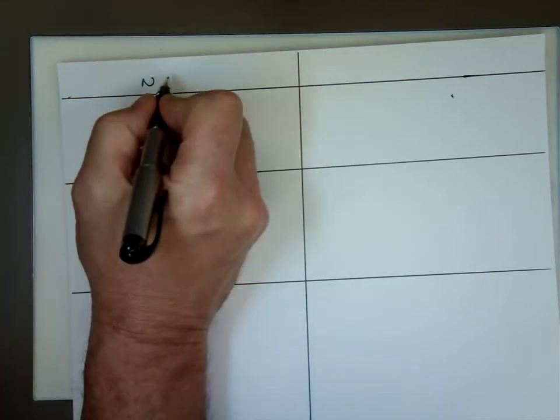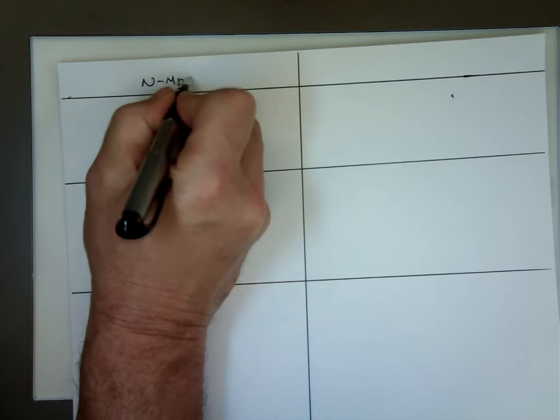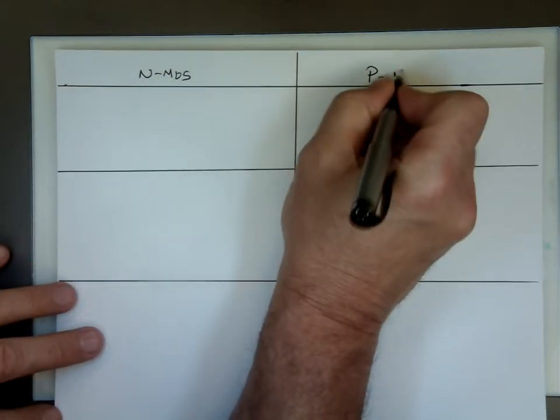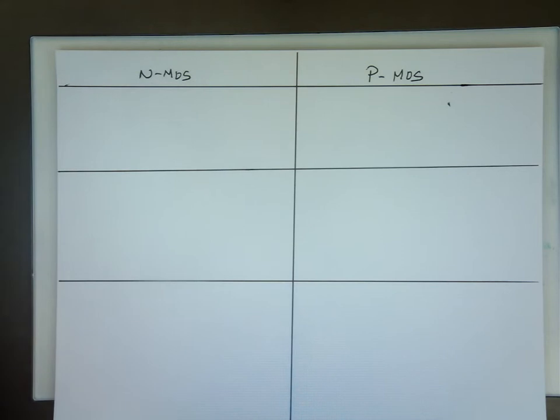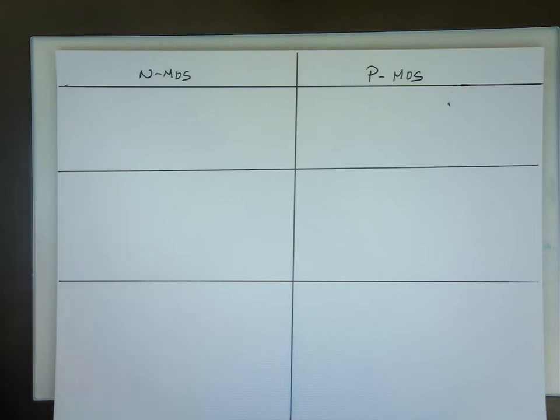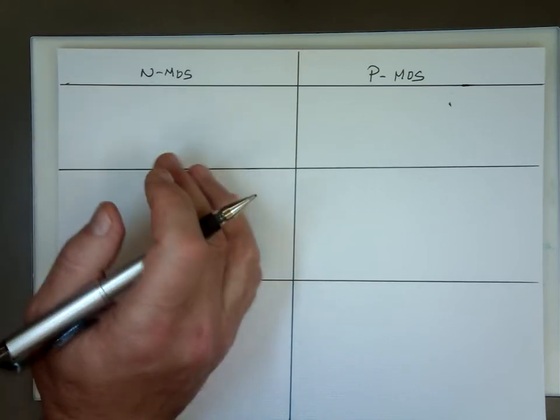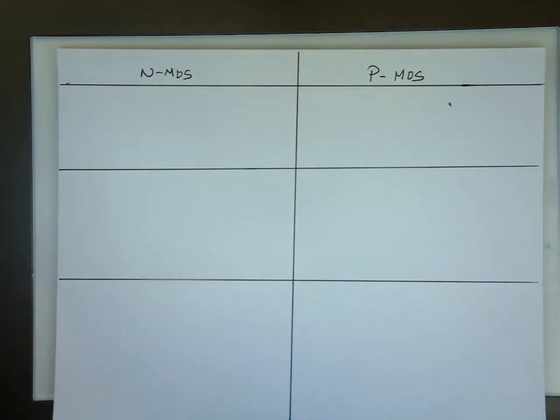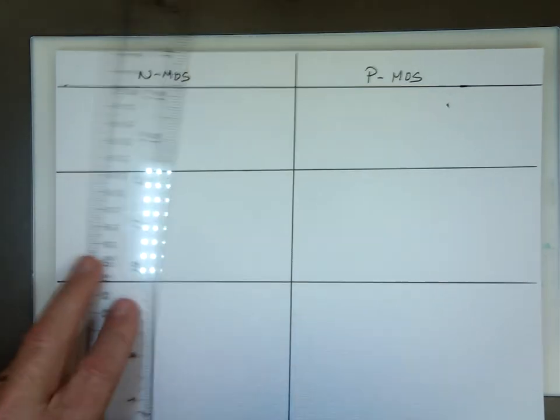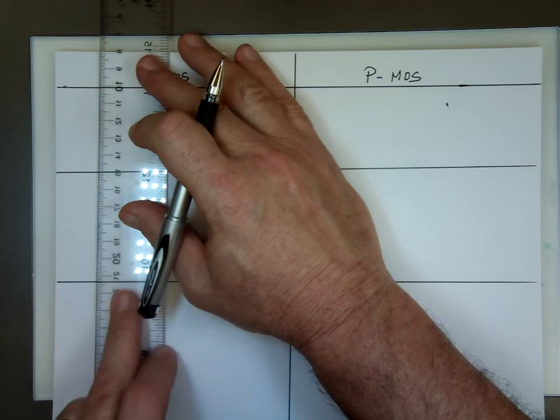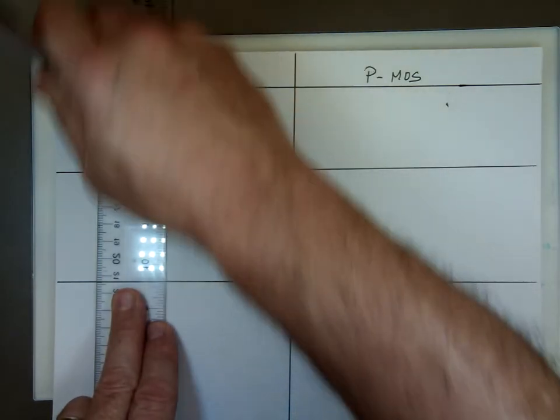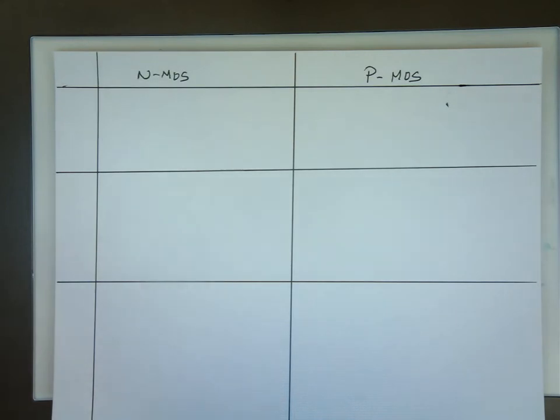So let me look at the N MOS on this channel, or on this side. And this is the P MOS. Let me just do the N MOS, and I'll come back to the P MOS. I forgot to write one more column here.